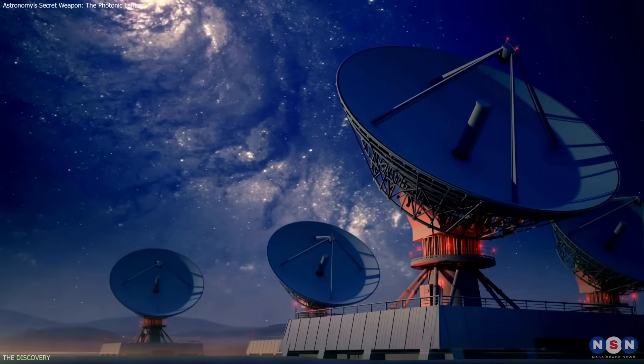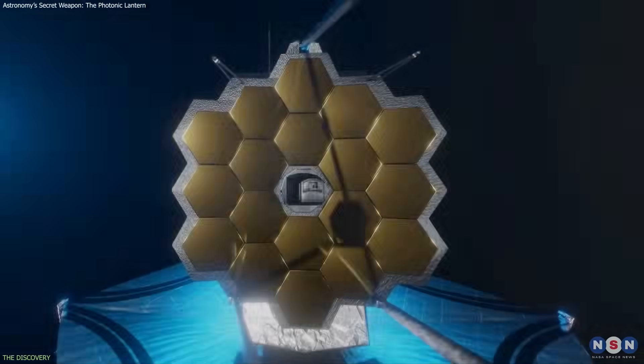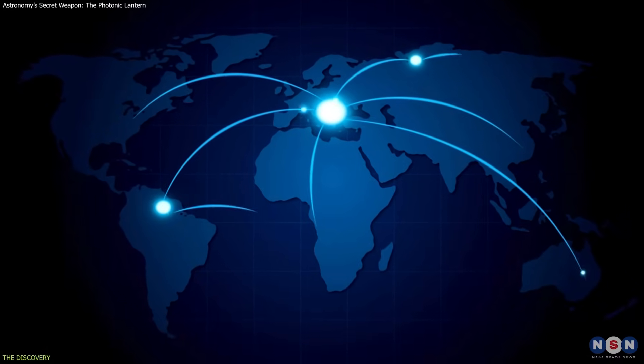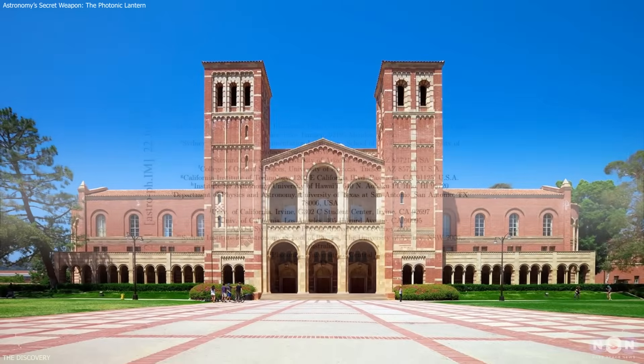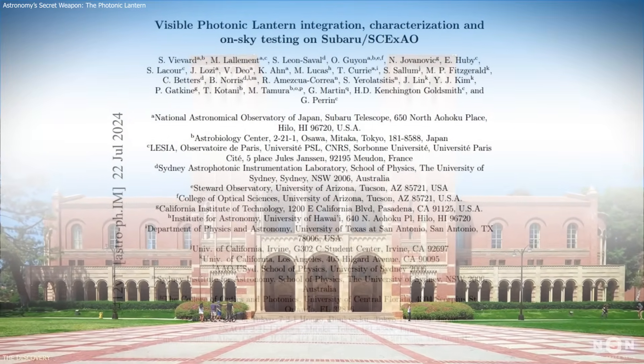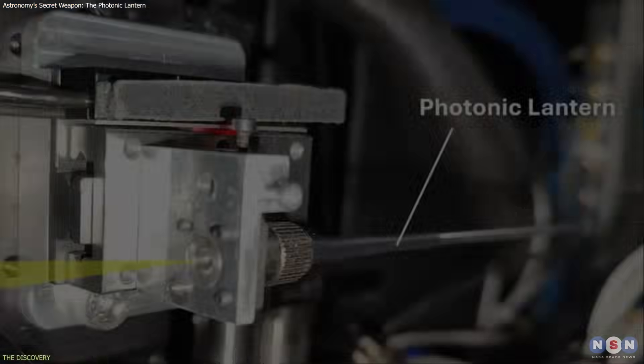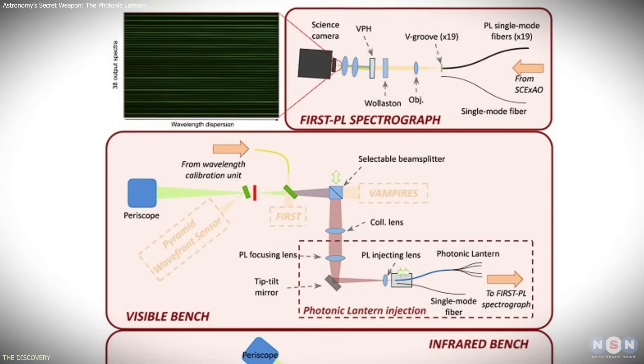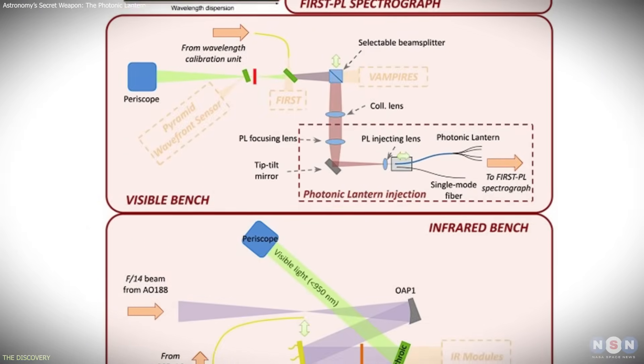For decades, improving telescope resolution has relied on building ever-larger mirrors or linking instruments across long distances. But in this experiment, the University of California, Los Angeles team took a different route. They used a photonic lantern, a type of fiber optic that processes incoming starlight in a fundamentally new way.